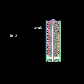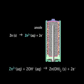In this cell, zinc is oxidized at the anode to form zinc ions, which immediately react with hydroxide ions in the electrolyte to form zinc hydroxide.